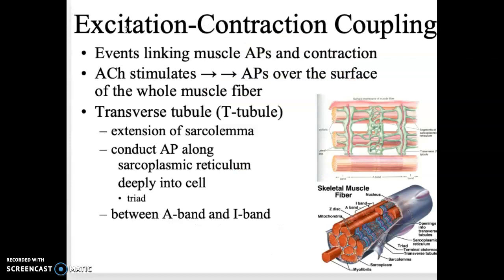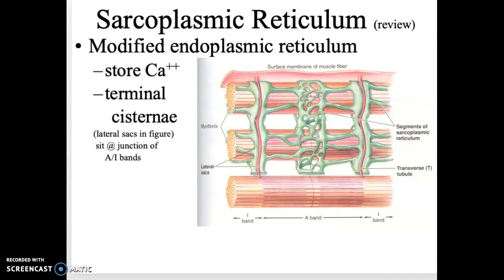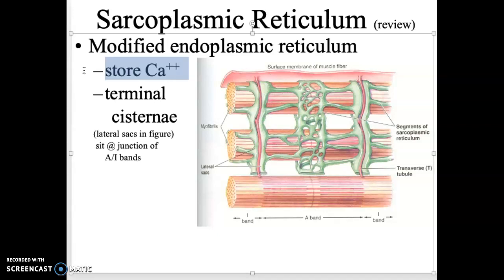In the general step two, excitation-contraction coupling, we link the muscle action potentials to the actual release of calcium. Remember, the transverse tubules — the T-tubules — are extensions of the sarcolemma, the plasma membrane. They go deep into the cell, and that allows the signal to continue deep into the muscle. The sarcoplasmic reticulum holds that calcium. This is super important because the calcium release is what will allow the troponin to move out of the way.